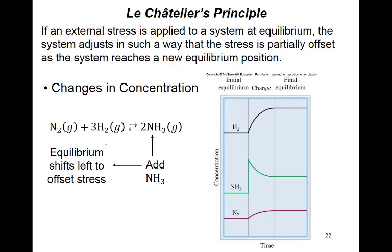Concentration is factor number one. As we know, the rate is directly proportional to the concentration. If the concentration of the reactant increases, the reaction will go in the forward direction. If the concentration of the product increases — for example, if ammonia is added, meaning the concentration of ammonia (the product) is increased — the reaction will go in the reverse direction.